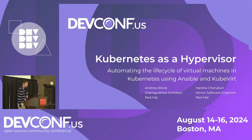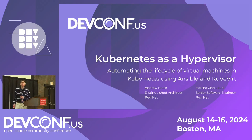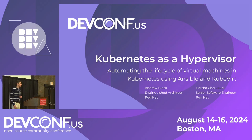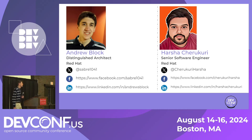Welcome today. We're going to be talking about Kubernetes as a hypervisor — automating the life cycle of virtual machines in Kubernetes using Ansible and KubeVirt. My name is Andrew Block. I'm a distinguished architect at Red Hat in our services organization.